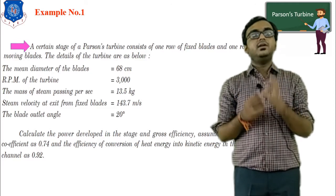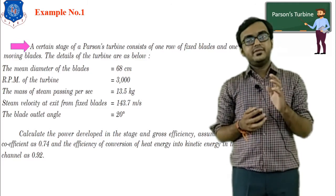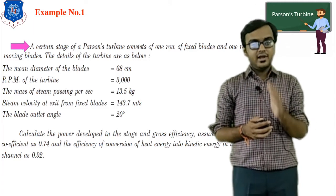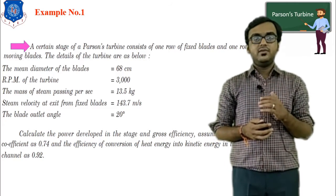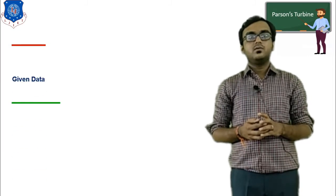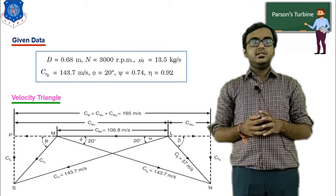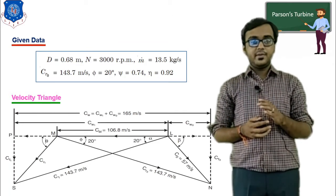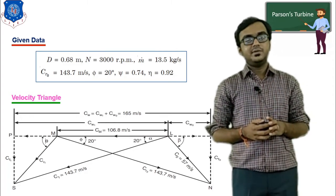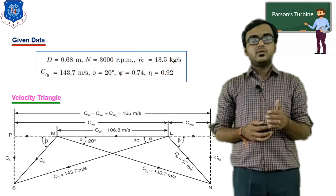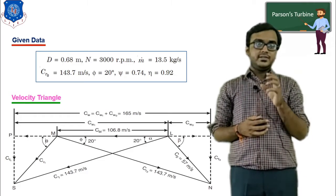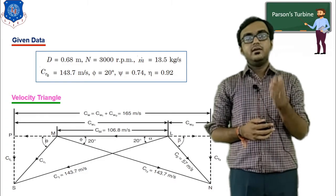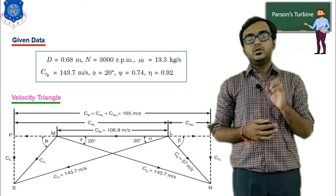To solve this, we need to plot the velocity triangle. I insist you to plot the velocity triangle and remember it. From the given data: diameter = 0.68 m, RPM = 3000, mass flow rate = 13.5 kg/s, relative velocity at outlet = 143.7 m/s, blade angle at outlet φ = 20°, ψ = 0.74, and efficiency of heat-to-kinetic energy conversion = 0.92.